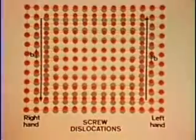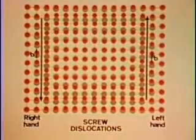The lower edge has its extra half plane above, as shown by the row of red atoms. The vertical screw dislocations have opposite directions of twist.